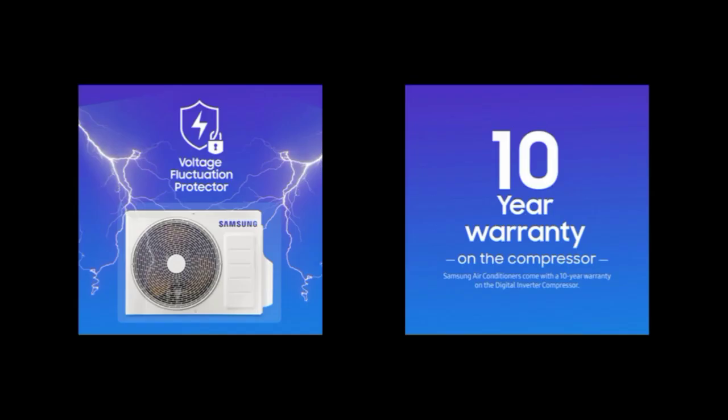For example, if there is a power fluctuation — sometimes the power is too high, sometimes too low — this can cause product damage. This AC has voltage fluctuation protection that keeps the power stable and protects the product from such fluctuations.